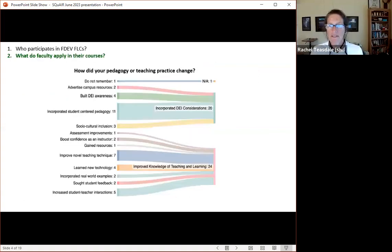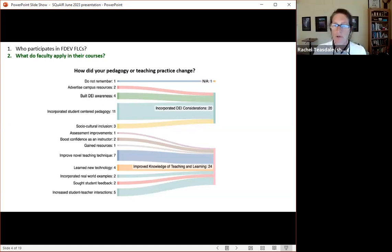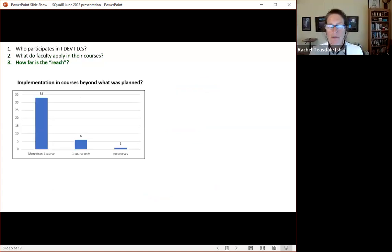The Sankey chart is the result of coding that Tina did, where she coded the responses and then clustered them into categories. So the question was, how did your pedagogy or teaching practice change as a result of the FLC? And we have two broad categories. People are incorporating DEI into their courses, and that makes sense because these were DEI focused FLCs. And then improving knowledge of teaching and learning in their teaching practice. So those were the main takeaways.